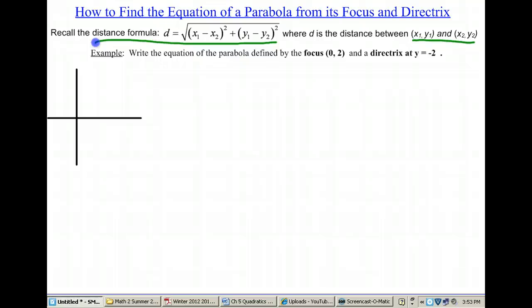Now looking at this example I say write the equation of a parabola defined by the focus at (0, 2) and the directrix at y equals negative 2. Let's just graph that real quick to get a visualization of what's going on. So there's my focus at (0, 2) and my directrix is at y equals negative 2 right there.